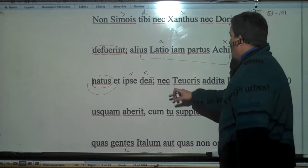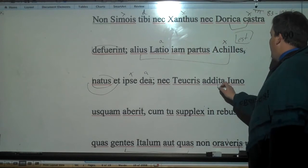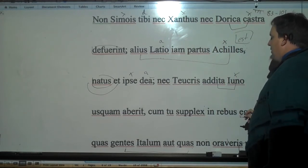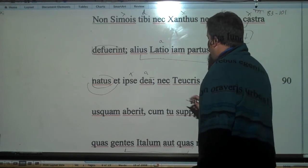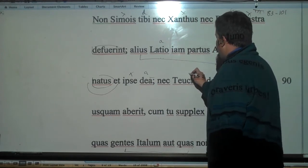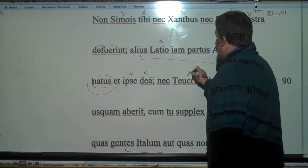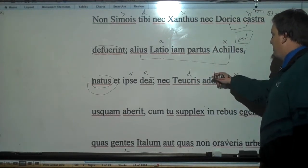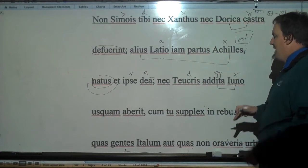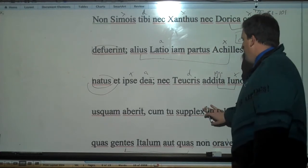And then she says nor will Juno, having been added, PPP, will - nor will Juno be continuously absent for the Trojans. So she's saying again Juno's going to be here. Nor will Juno, having been added, PPP, will ever be absent for the Trojans.